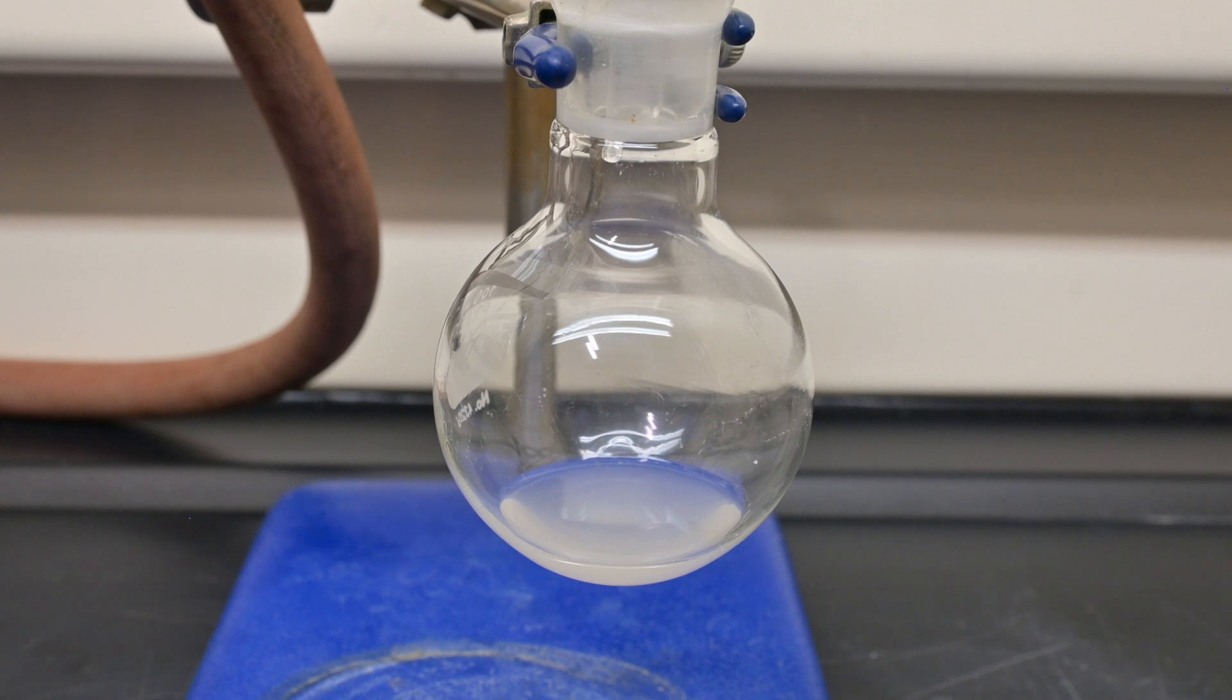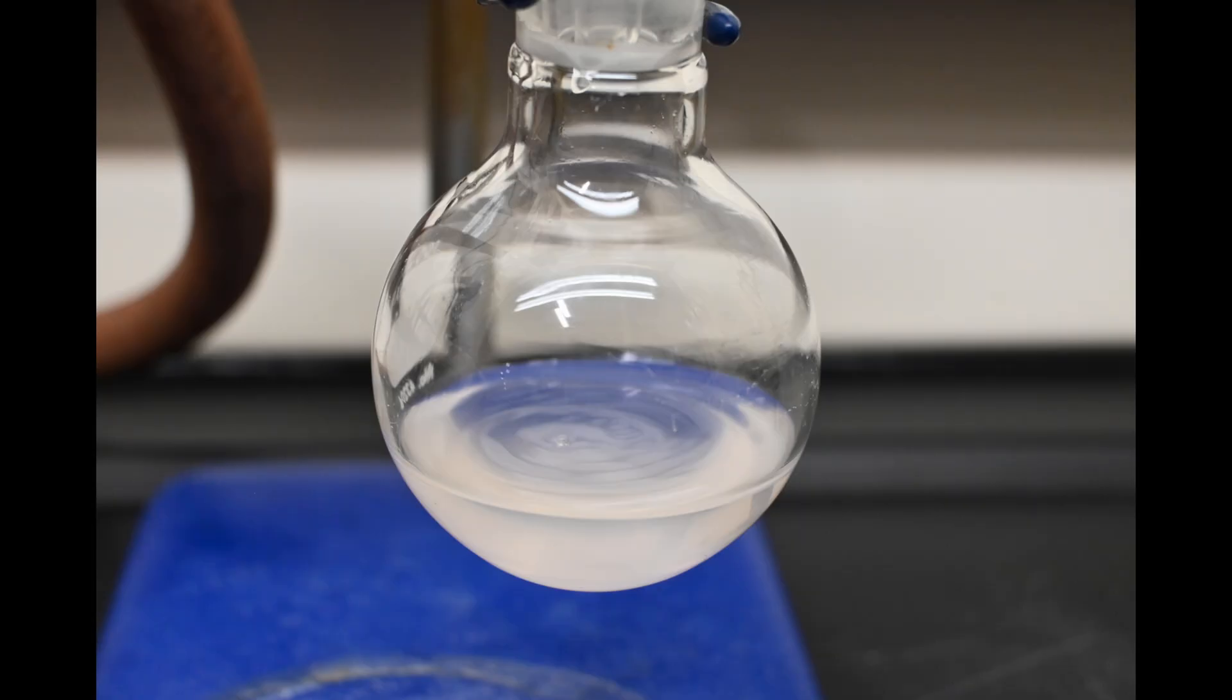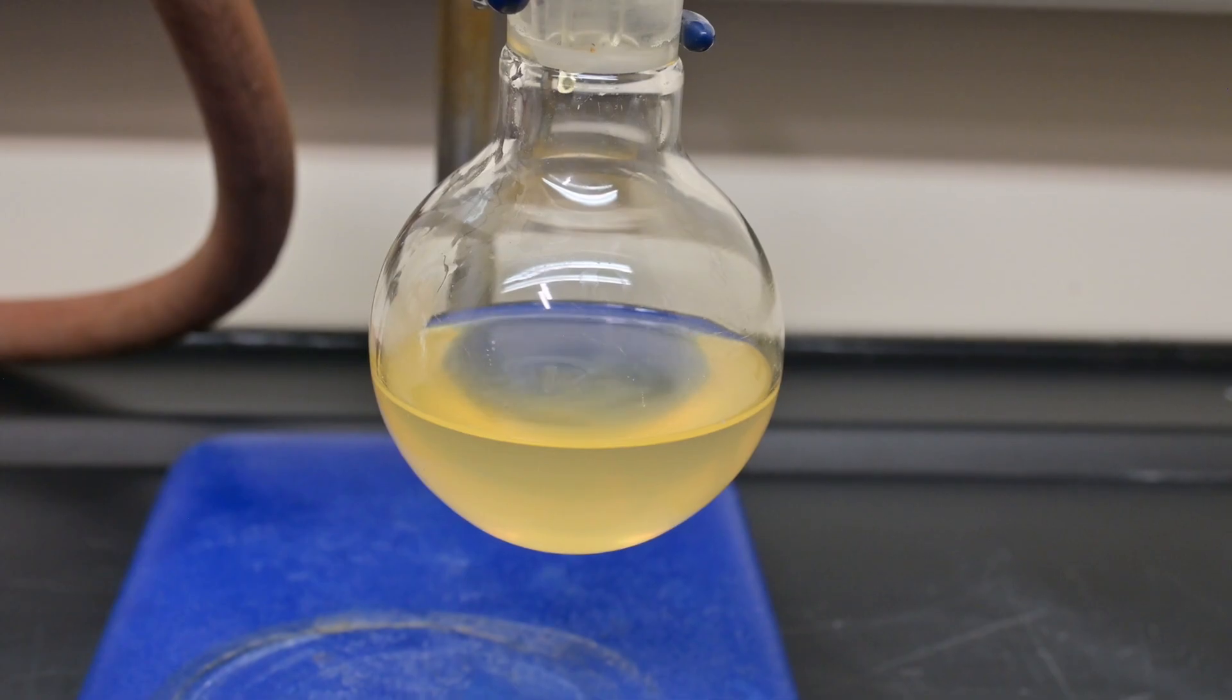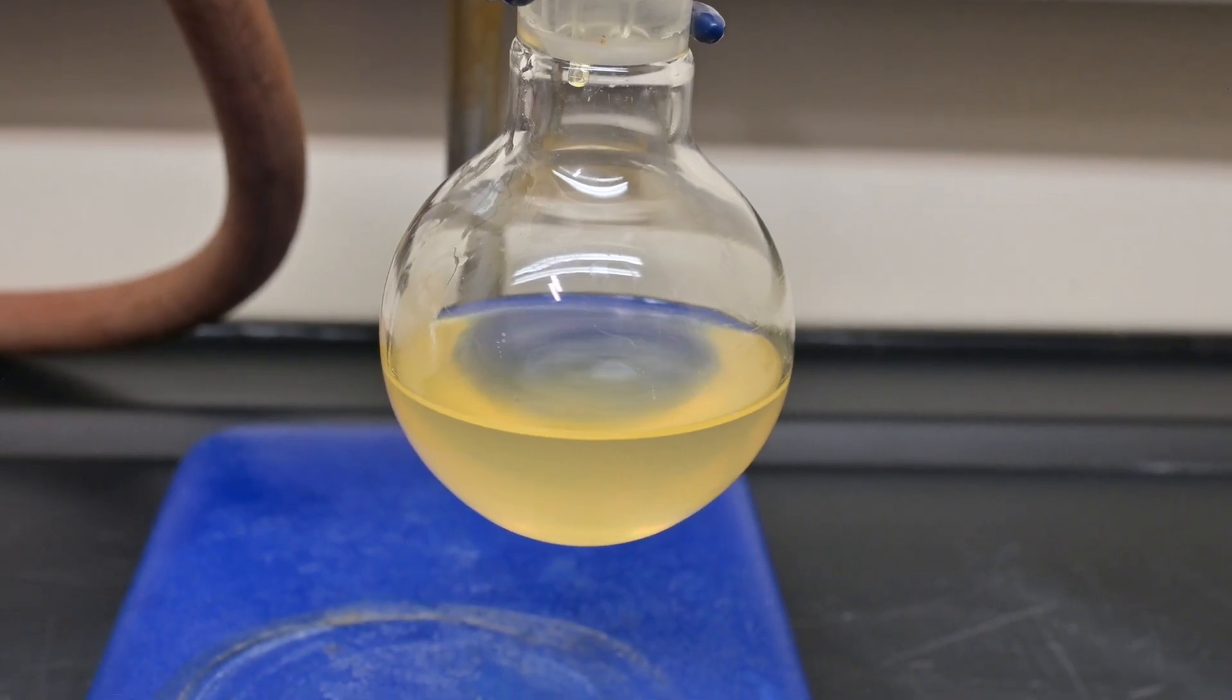After a little bit, it works its way down the condenser and rolls into the collection flask. It started off nice and clear, but over the course of the reaction, it turned yellow. Shortly after the change in color, no more product came over.